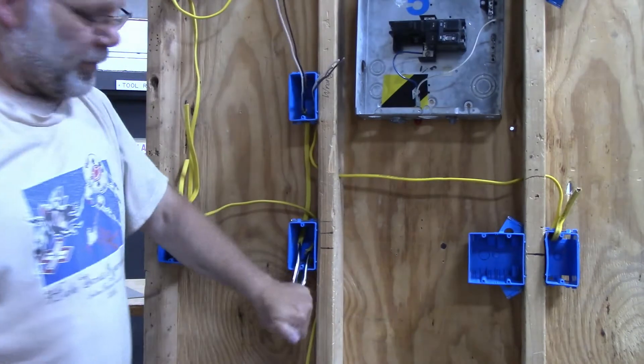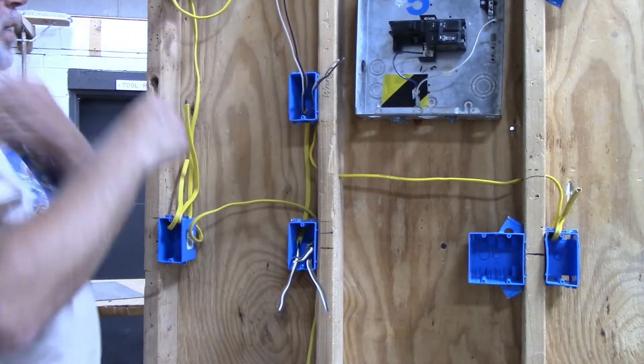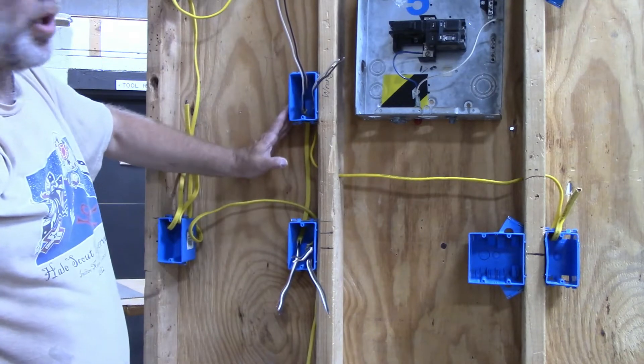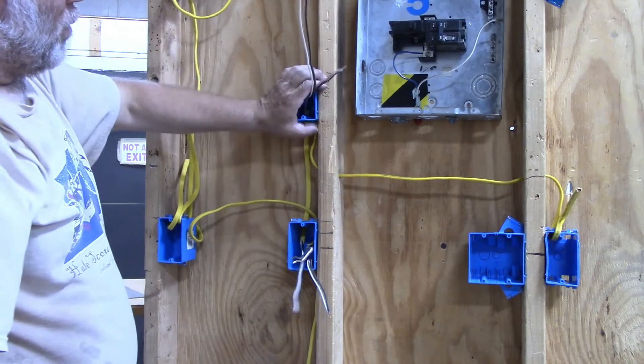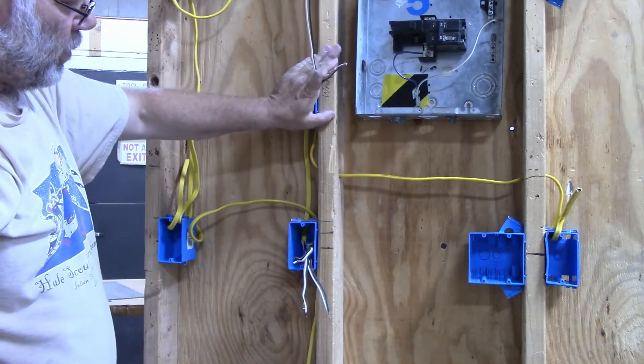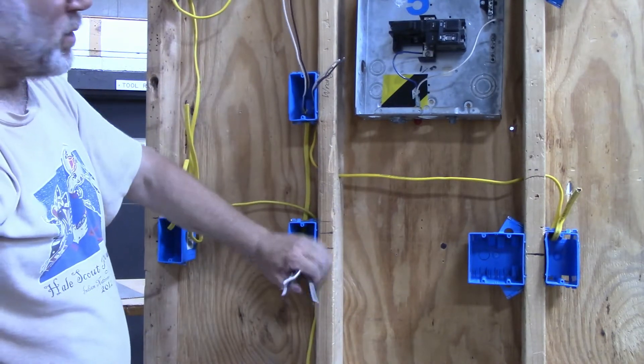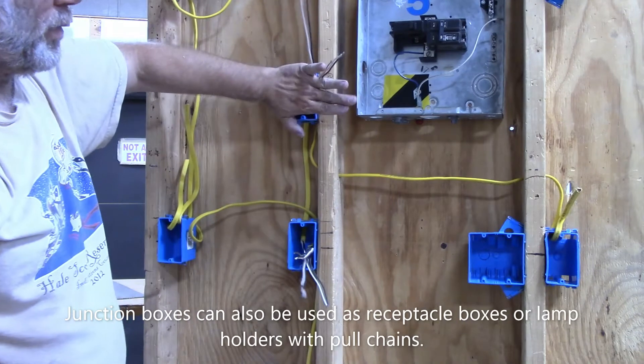Just like that. Now these two boxes right here are now what we're going to call a junction box, because what we're going to do is cover this up with a blank cover so there's no switch on it, there's no plug on it, just a blank cover, and it's used to connect the two wires.